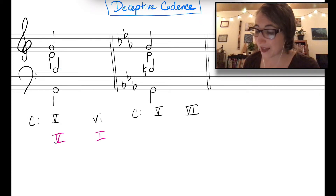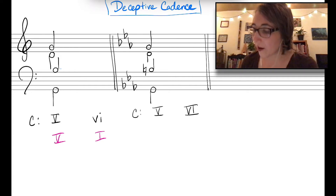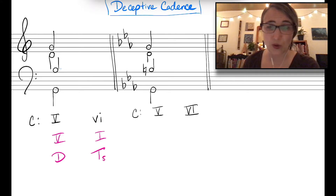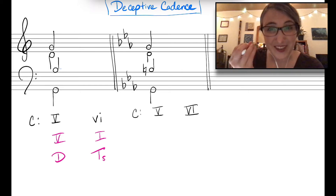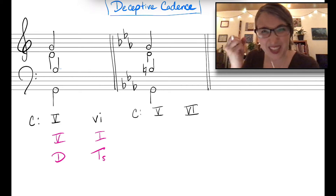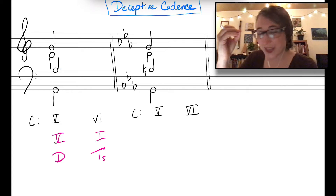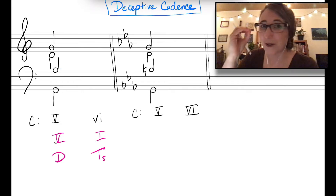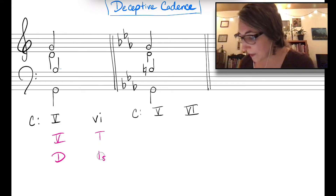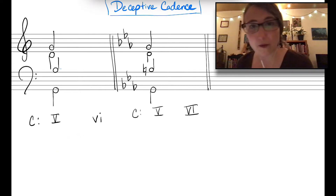In your functional analysis, because the six really is a substitute for the tonic, you're going to write this out as dominant to tonic-substitute. We think of that six chord as just a replacement for tonic. That's what makes it a deceptive cadence — we sort of expect the tonic, we even hear scale degree one or three in the top voice, but it's not actually a one chord; it's a six chord instead.